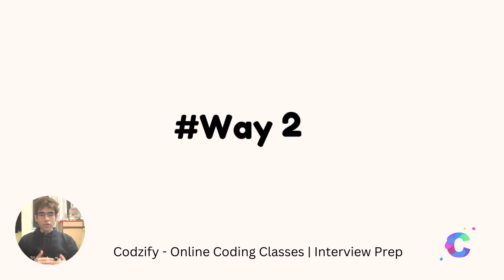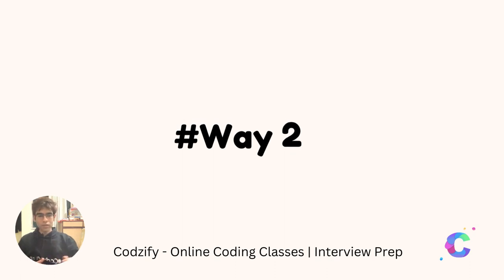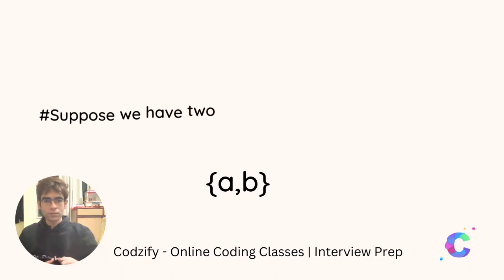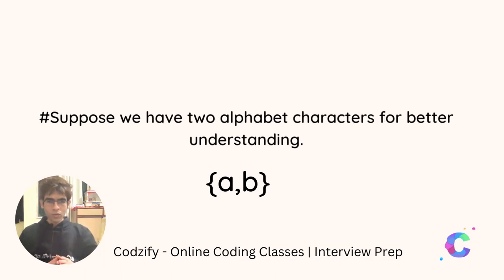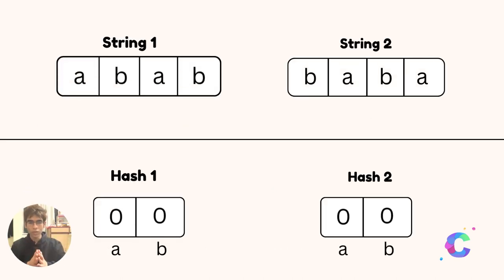Now we see the way to how you can analyze the anagrams through hash tables. Suppose we have only two alphabet characters A and B. What we will do here is we will maintain hash tables for both the strings, and these hash tables will maintain the character counts.